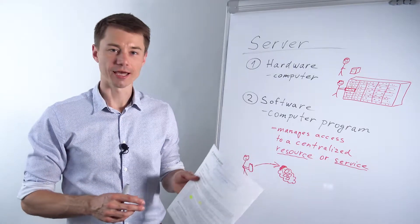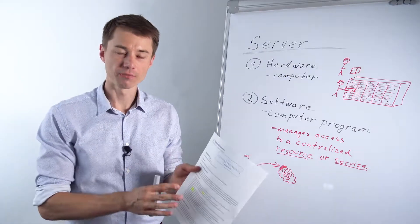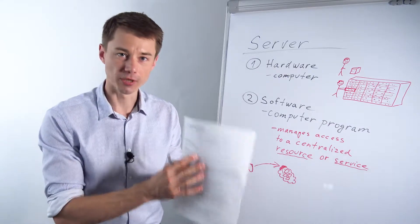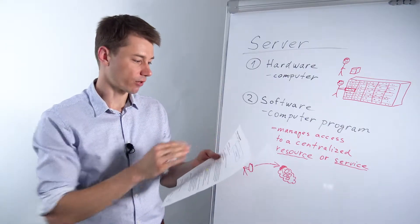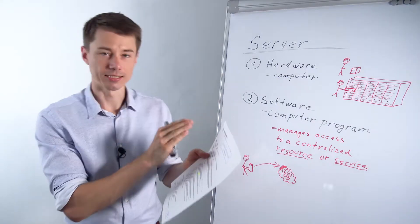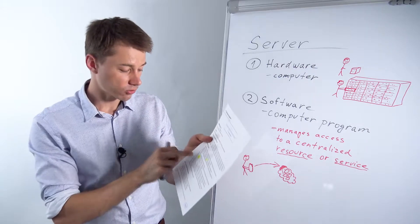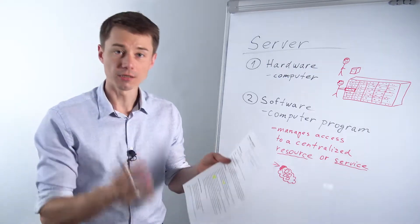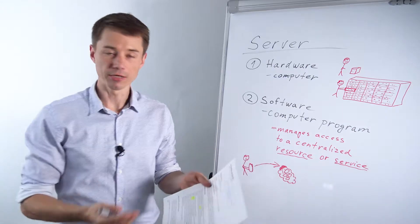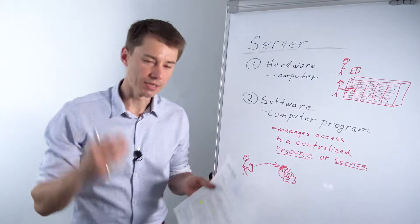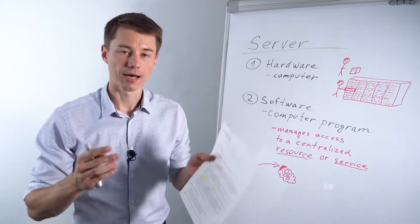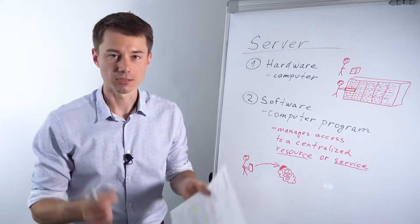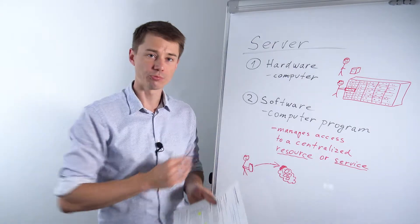In this video series we talk about some of the key terms we can find on job descriptions. So this is a JD for a junior system engineer and the key term I found here is server. A server is a term you guys as technical recruiters may hear on a daily basis and still may not understand what a server is. So let me explain it briefly.